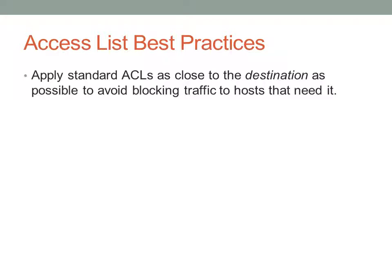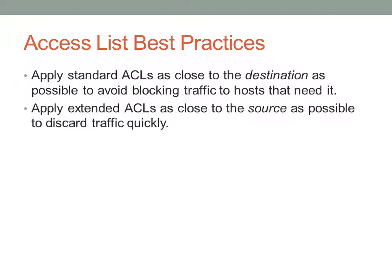Some best practices: apply standard access lists as close to the destination as possible. Since you only specify the source with a standard access list, you don't want to accidentally limit a particular source from resources it might need to access. Apply extended access lists as close to the source as possible so that traffic is discarded immediately and doesn't consume unneeded bandwidth. Some people favor applying extended access lists on the most powerful router on your system, depending on hardware limitations.